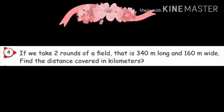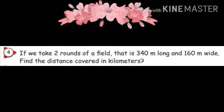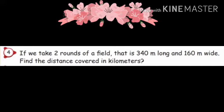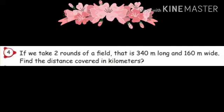Fourth sum: If we take two rounds of a field that is 340 m long and 160 m wide, find the distance covered in kilometers. That is, going around a field twice with the given length and width.